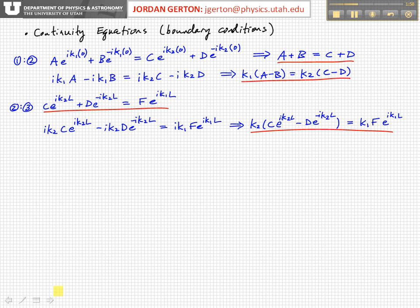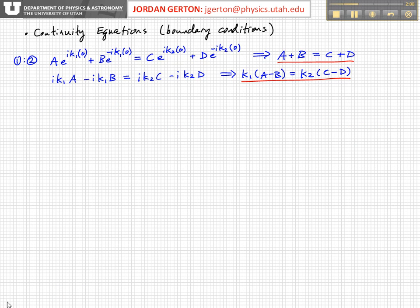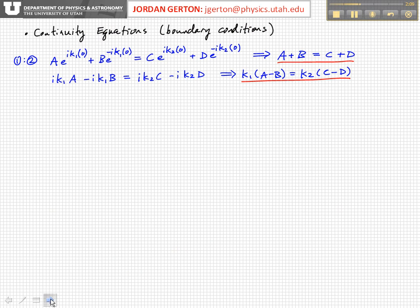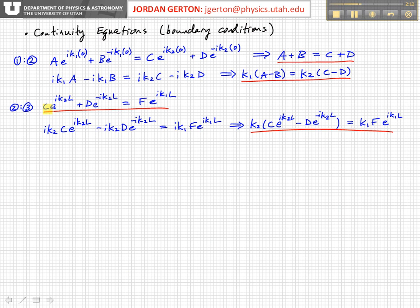At x equals L, at this place here, the boundary between region 2 and 3, then we have this equation for the wave functions. The wave function in region 2, C e to the i K2 L plus D e to the minus i K2 L is equal to F e to the i K1 L, K1 because again you're going back down to the potential energy equals 0.